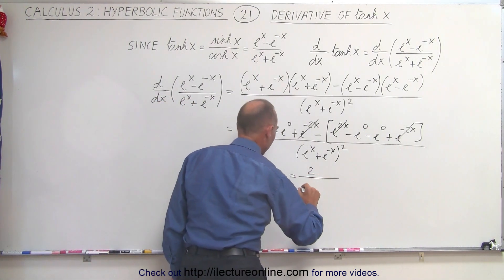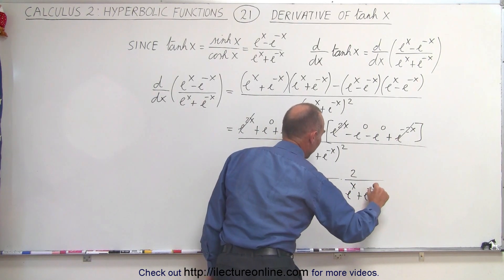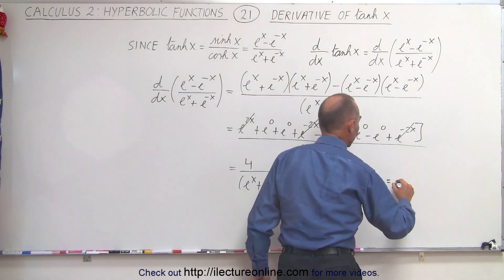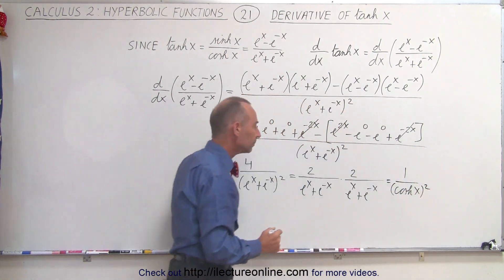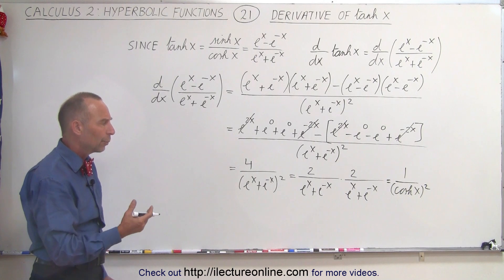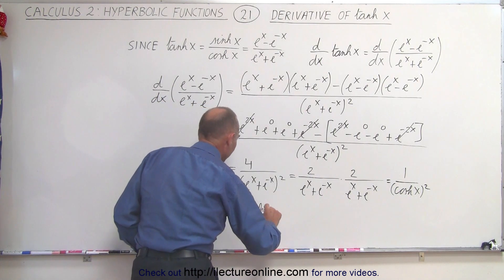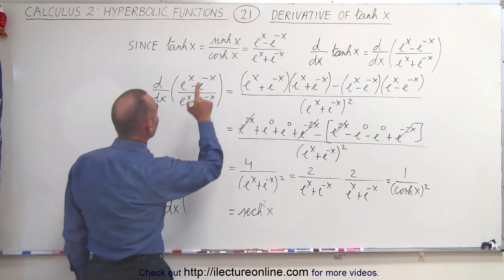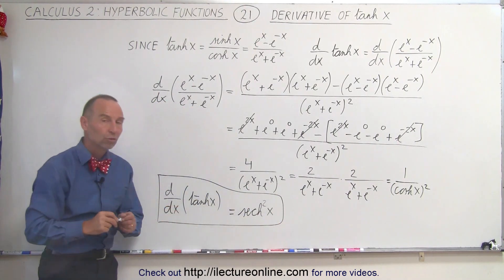We can write 4 over (e to the x plus e to the minus x) squared as 2 divided by (e to the x plus e to the minus x), times 2 divided by (e to the x plus e to the minus x). Notice that each factor is the inverse of the hyperbolic cosine of x, i.e., sech(x). So this equals 1 over cosh(x) quantity squared, which is the hyperbolic secant squared of x. Therefore, d/dx of the hyperbolic tangent of x equals the hyperbolic secant squared of x.